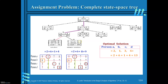If the third person is assigned with job 4, then the fourth person must be assigned with job 3, giving a total cost of 25. Comparing the two options, the best possible solution has a total cost of 13. The optimal solution is 13.